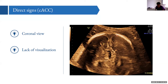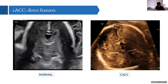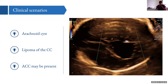To confirm the diagnosis, a coronal view can be obtained, showing absence of the cavum septum pellucidum, no anechoic structure representing the corpus callosum, and lateral displacement of the frontal horns from the interhemispheric fissure. Comparing a normal coronal view — showing interhemispheric fissure, corpus callosum, cavum septum pellucidum, and lateral frontal horns — with an ACC case confirms these findings clearly.